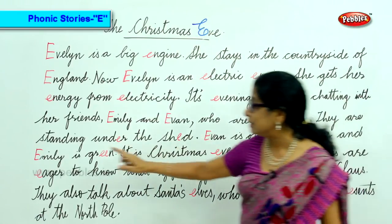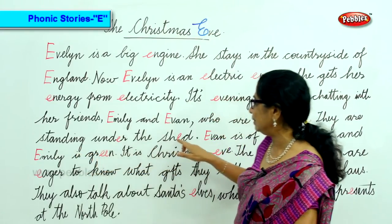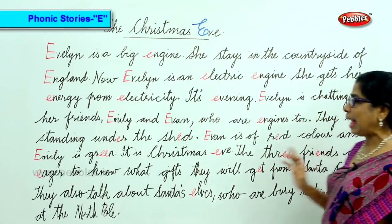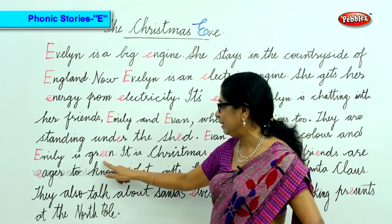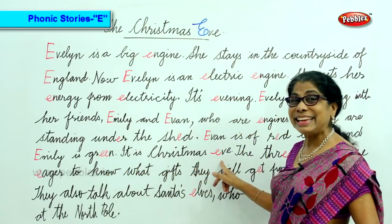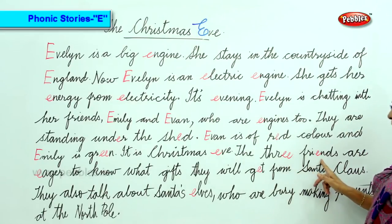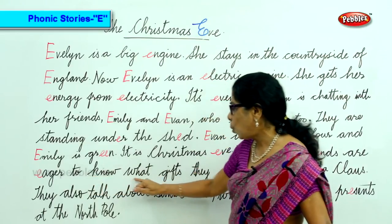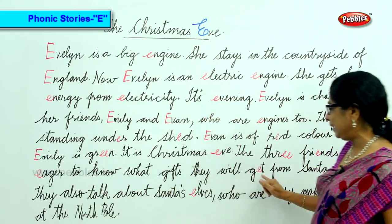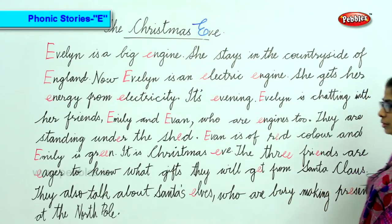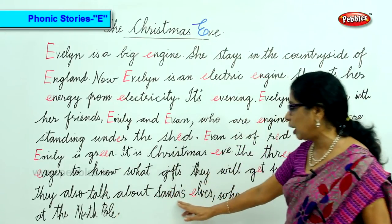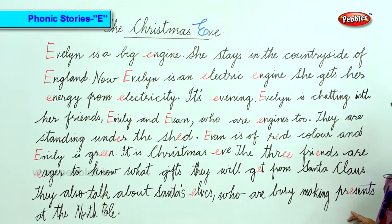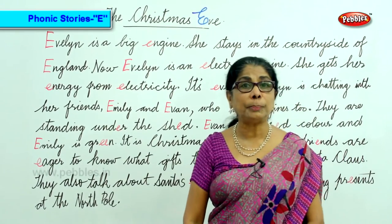They are standing under the shed. Evan is of red color and Emily is green. It is Christmas Eve. The three friends are eager to know what gifts they will get from Santa Claus. They also talk about Santa's elves who are busy making presents at the North Pole.